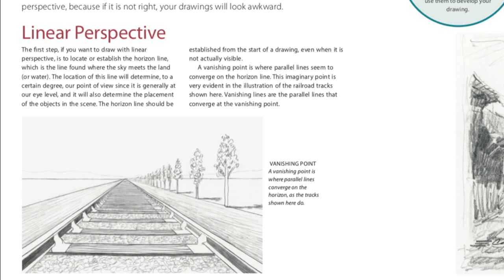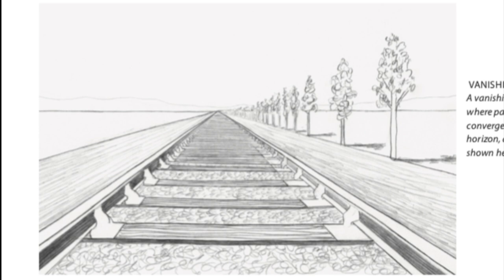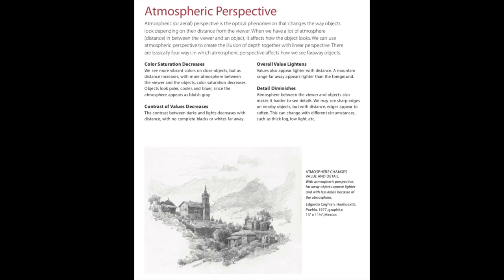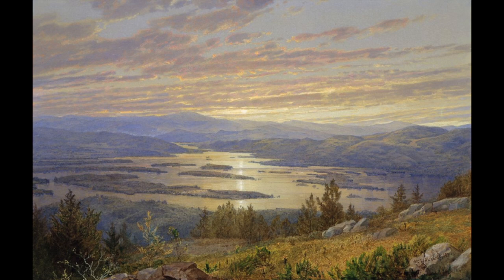Linear perspective, which uses converging lines to represent the sizes of objects as they appear smaller and smaller the farther they are. And atmospheric or aerial perspective, which has to do with the variation of color and detail as distance from the viewer increases.